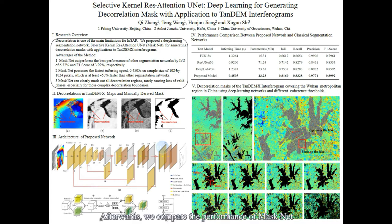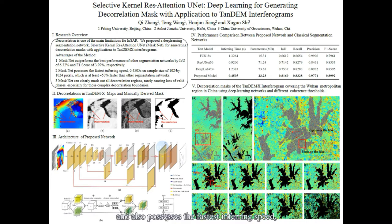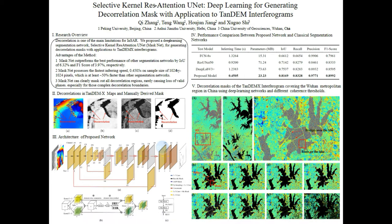Afterwards, we compare the performance of MaskNet with other classical segmentation networks, including FCN, ResUNet, and DeepLabV3+ network. Our evaluation metrics show that MaskNet outperforms all other segmentation networks and also possesses the fastest inferring speed, which is at least 50% faster than other segmentation networks.